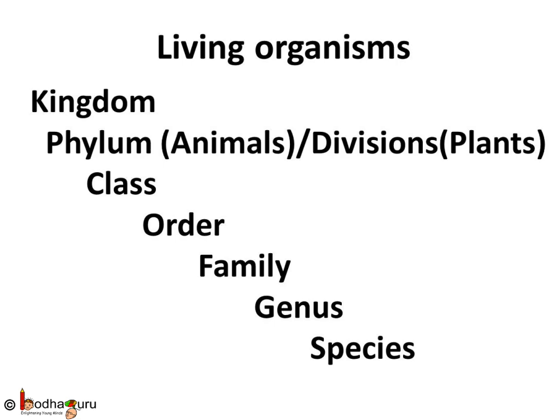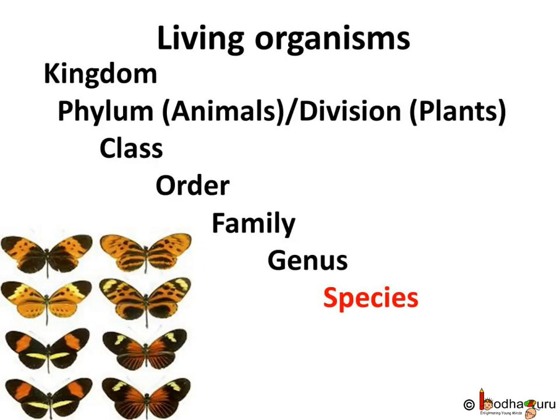A kingdom was divided into various phyla, then into various classes, divided into various orders, which in turn were divided into various families, then genus, and finally species. So the basic unit of classification is species.